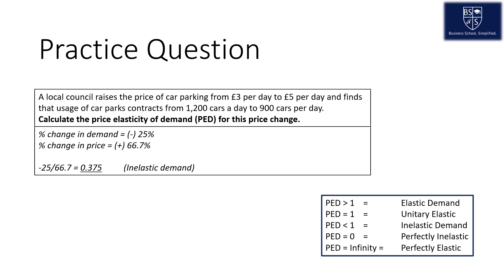If you were to divide negative 25 by positive 66.7, you receive the outcome of 0.375, which, if you refer to the diagram in the bottom right, is inelastic demand. That is because the PED is less than 1, and so it is inelastic demand.